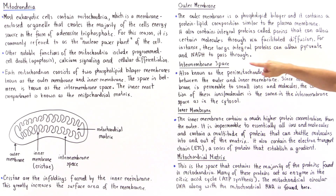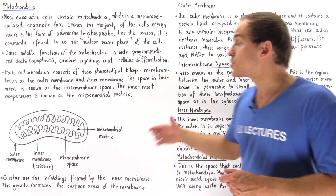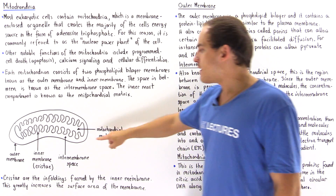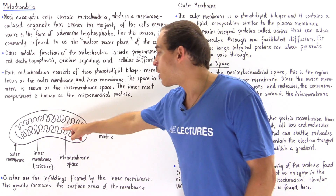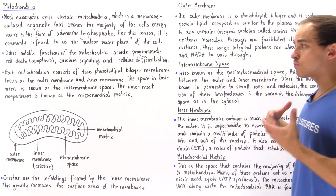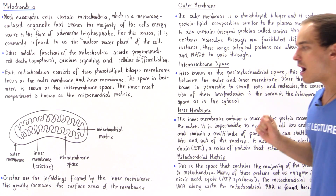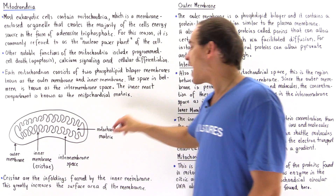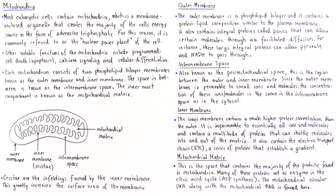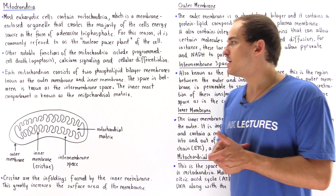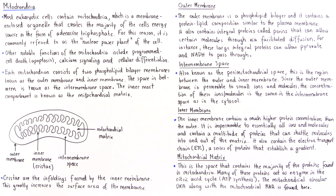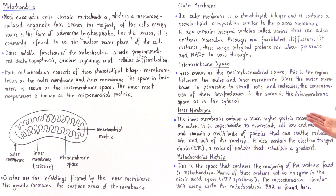For example, the NADH molecule that can easily pass through the porin proteins on the outer membrane cannot pass through the inner membrane. A special protein that uses ATP must carry that NADH molecule from the intermembrane space into the mitochondrial matrix, where it is broken down to create an electrochemical gradient and produce ATP. The inner membrane thus contains multiple proteins that shuttle molecules into and out of the matrix.